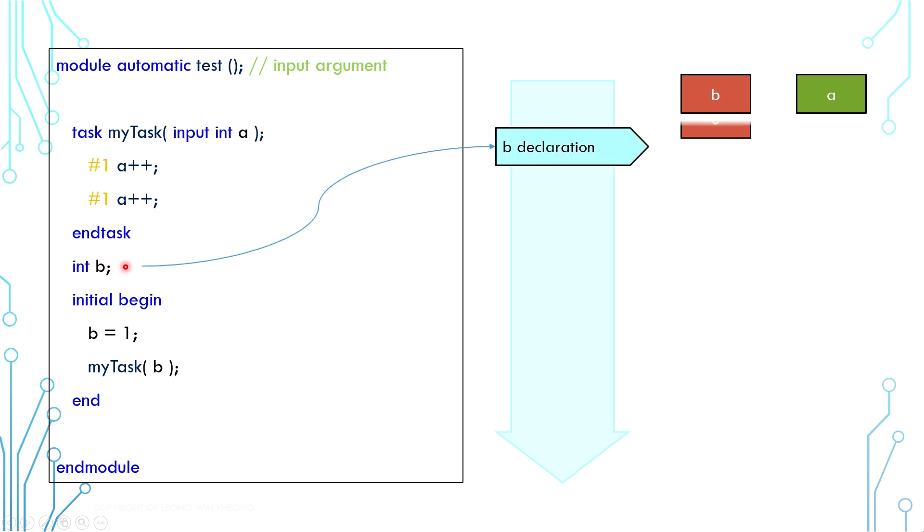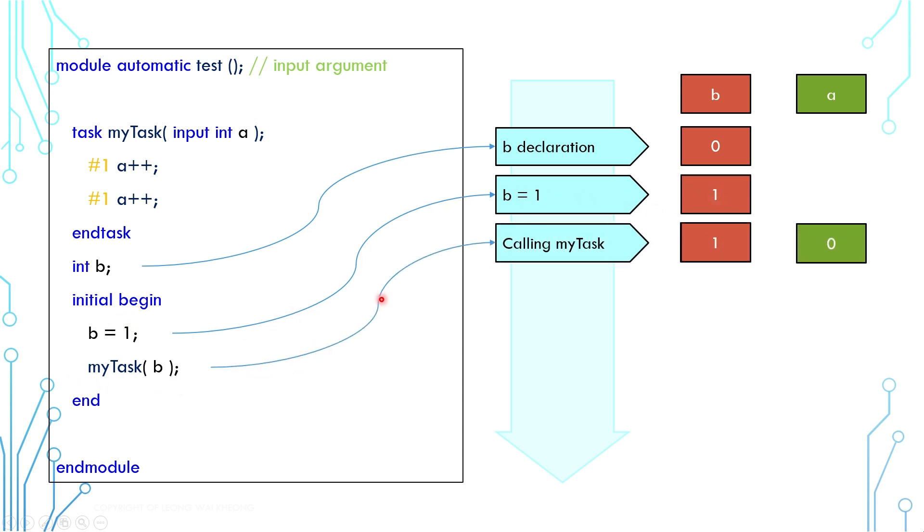At this point, B is created and its value is default 0. At this point, it is assigned to 1. And at this point, the task is called and B is passed as an input argument. Also at this point, argument A is created and at first, A is defaulted to 0. But A being an input argument, it takes the value from B and becomes 1.